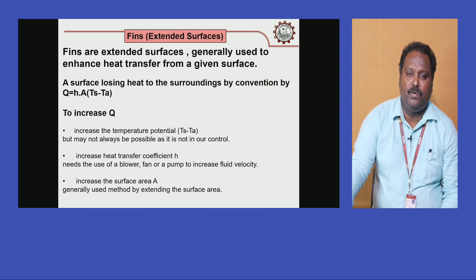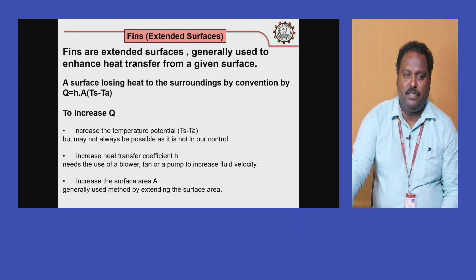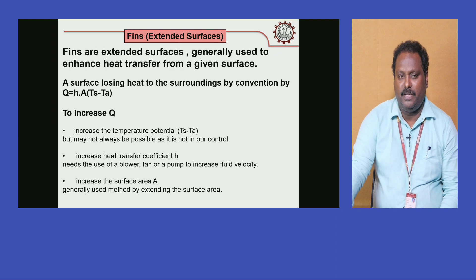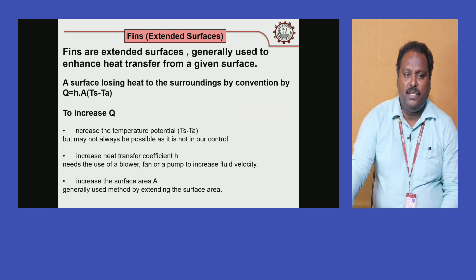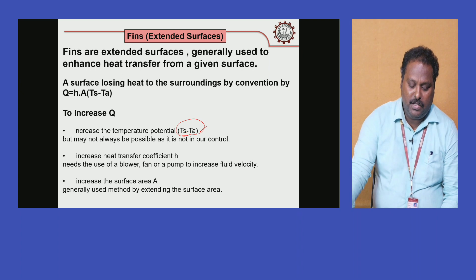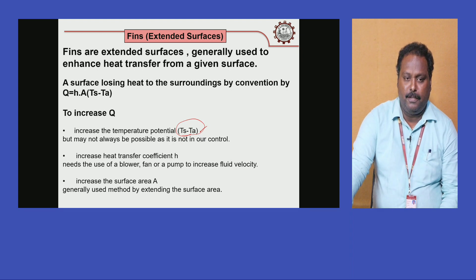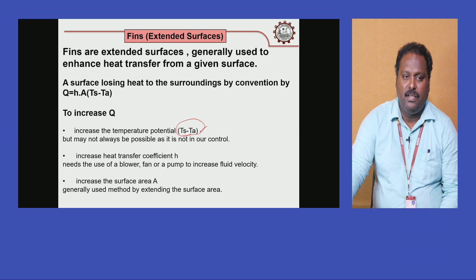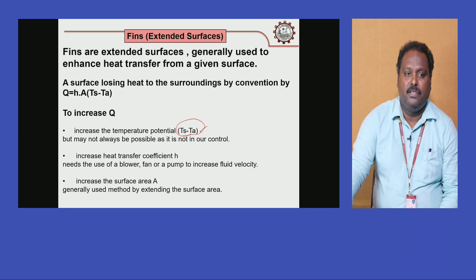A surface loses heat to the surroundings by convection: Q = h·A·(Ts − T∞), where h is the heat transfer coefficient, A is the surface area, Ts is the wall temperature, and T∞ is the ambient temperature. To increase Q, we can increase the temperature difference (Ts − T∞), increase the heat transfer coefficient h, or increase the surface area A. Increasing surface area by extending surfaces is the common method. This equation is also called Newton's law of cooling.